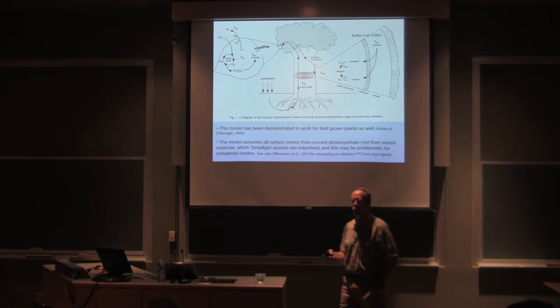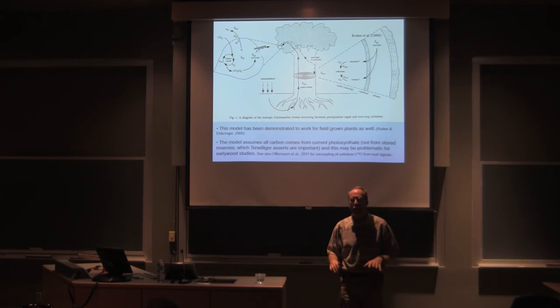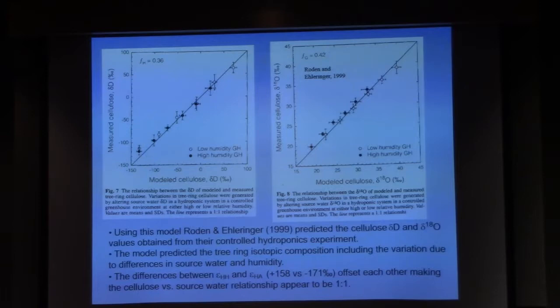So let's see if this little model works. So one of the things that I did in Jim's lab was we grew hydroponics, which is in water tanks, a lot of riparian trees at different humidities, but we labeled the source, the water in those tanks to a lot of different values.